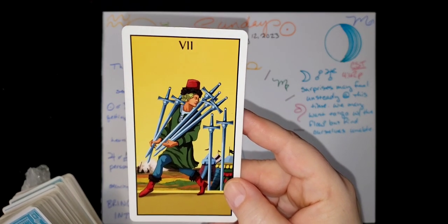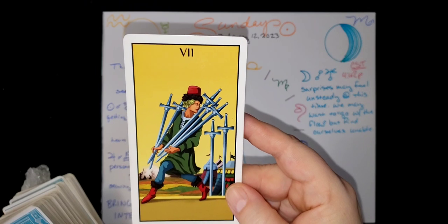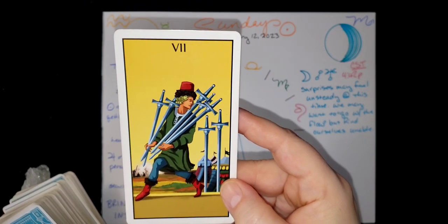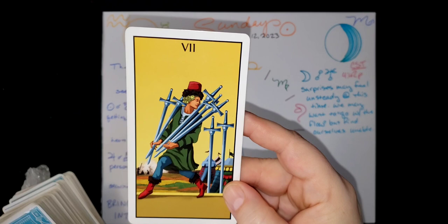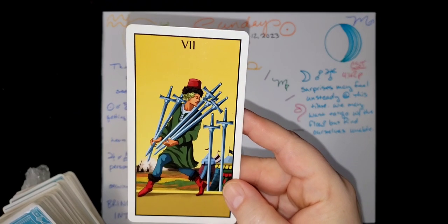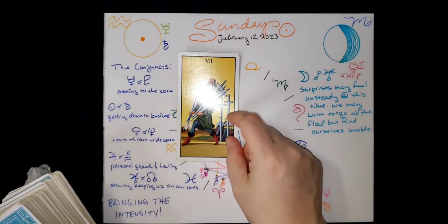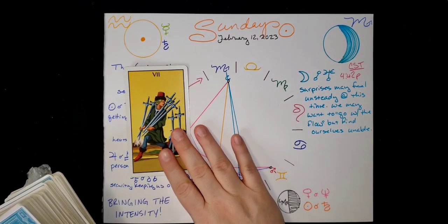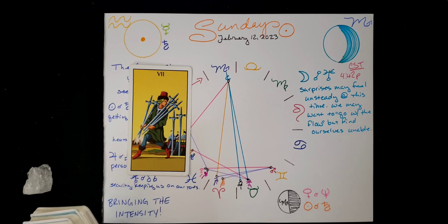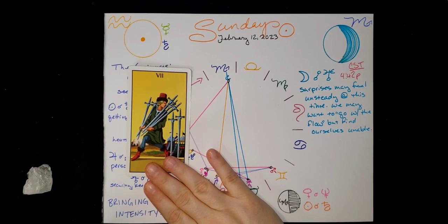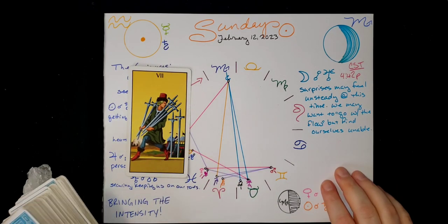Here we come to the Seven of Swords, and we see somebody sort of making off with some things that are not theirs. It's kind of a shady behavior. If you think of the swords as thoughts, plans and communications, then it might look like somebody is trying to make off with somebody else's good ideas, trying to use somebody's words even perhaps against them or in spite of them.